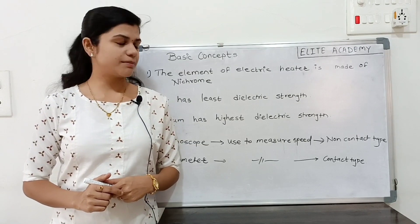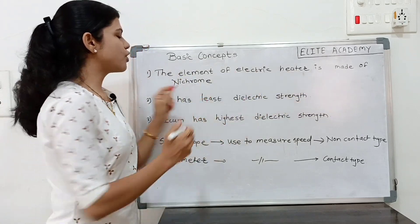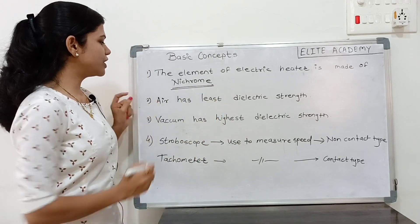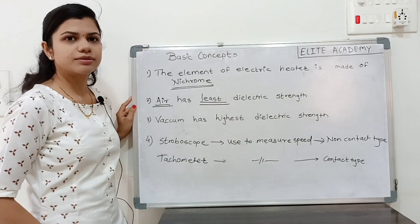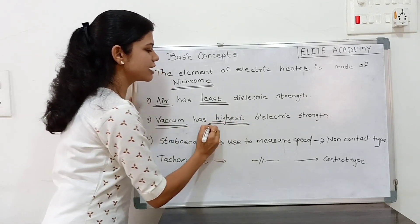The first point should be remembered. The element of electric heater is made of nichrome. The second point, air has least dielectric strength. Where vacuum has the highest dielectric strength.